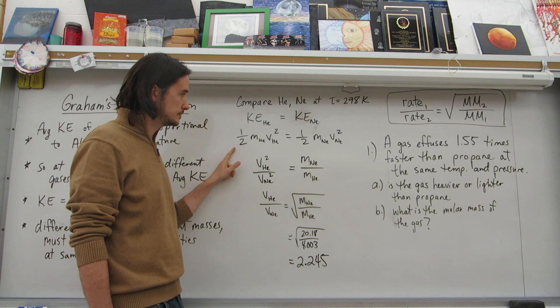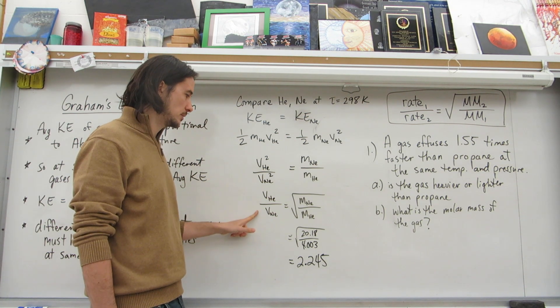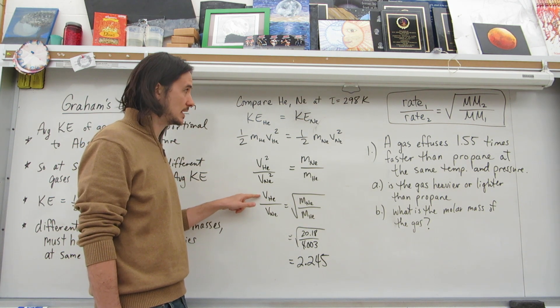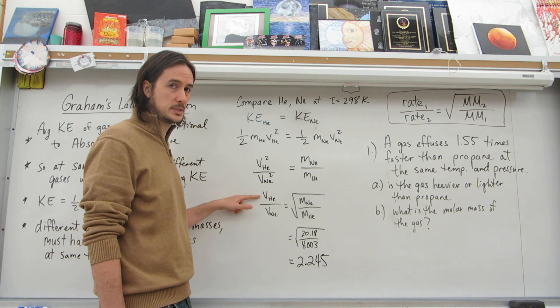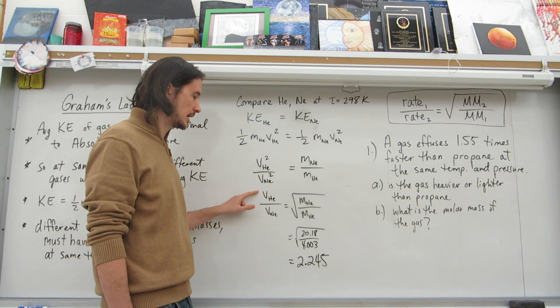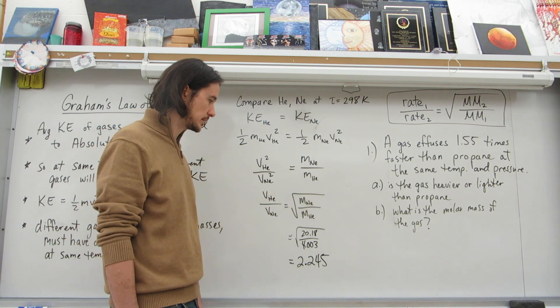We plug in the equations, and we rearrange. We get the velocity of, this is velocity, not volume. I know we're dealing with gases, but this is not volume right now. It's velocity. Velocity of helium over the velocity of neon is equal to the square root of that.